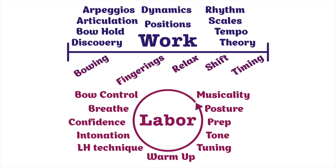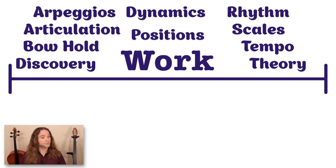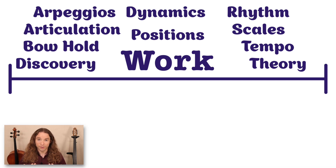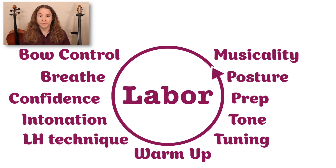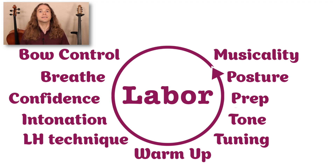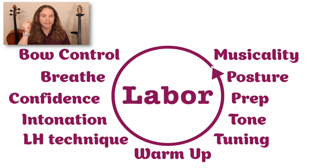As you see right here, some tasks are definitely work-related — for instance, arpeggios, articulation, bow hold, discovering dynamics, posture, rhythm. These are things that are work; once you learn arpeggios, you've learned the arpeggio. Then we go down to labor: things like bow control — you never stop thinking about your bow control, bow distribution, bow management — or confidence and intonation. These are things that if you switch off for a moment in your head, you lose it, so you must always maintain them.